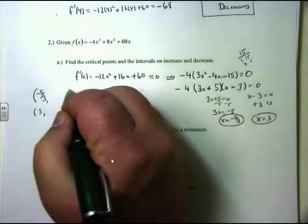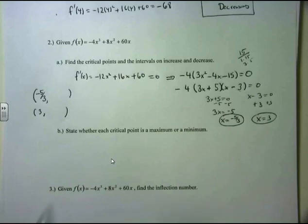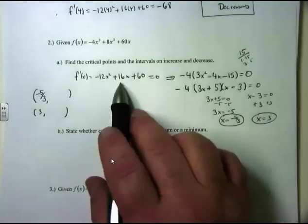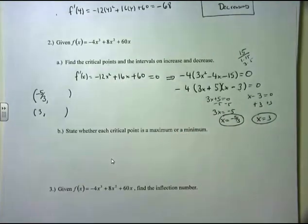I need to give y-coordinates by plugging these numbers into the original equation. Using my calculator with x = -5/3: negative 4 times (-5/3) cubed, plus 8 times (-5/3) squared, plus 60 times (-5/3).